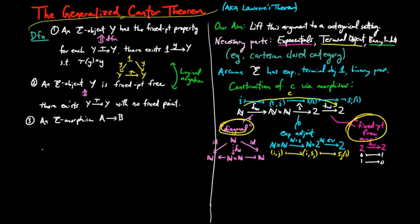Three, an e-morphism f from a to b is point surjective, provided for each point b in b, there exists a point little a in a, such that f of a is equal to b.